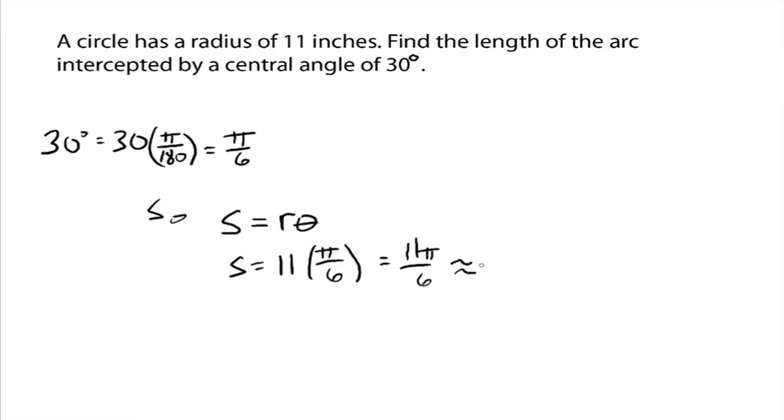And as a decimal, that would go to 5.7596. And since we're in inches here, this would be inches. Everybody see that? It's pretty simple. But theta has to be in radians. The most common error is to go 11 times 30 and get 330, and 330 inches, for an angle that's only 30 degrees and the radius is only 11 inches. Hopefully that just doesn't even make sense, and we'd realize that we'd be in error somewhere. So remember, convert degrees into radians, and then you can find the arc length. That's what this is called, the arc length.